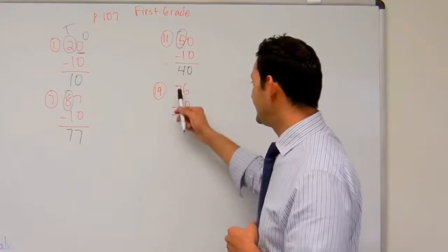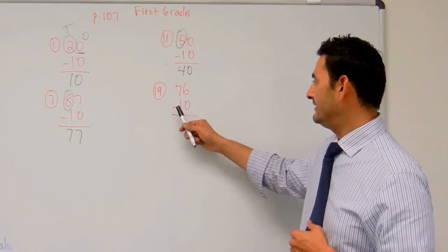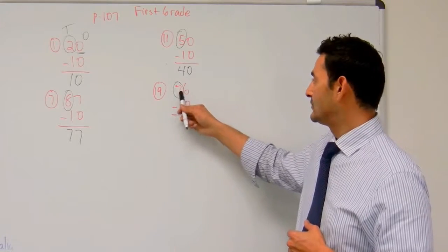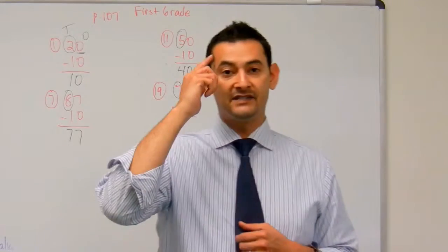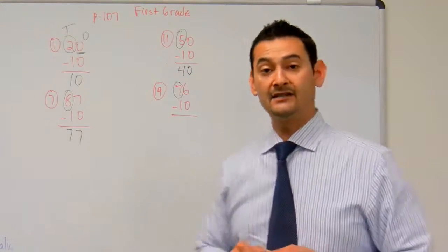And finally, we have seventy-six minus ten, that's number nineteen. And the seven is the one that's going to change. The one digit's going to stay the same. So the seven, seven minus one, that's going to be a six. So we have seventy-six minus ten equals sixty-six. That's correct, boys and girls.